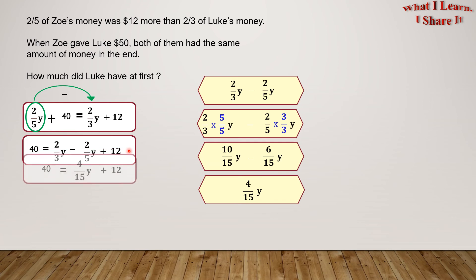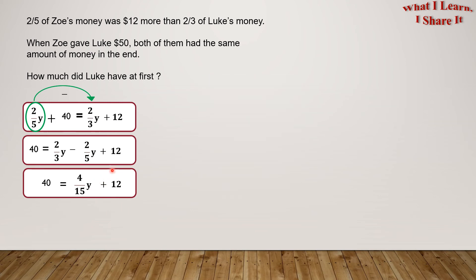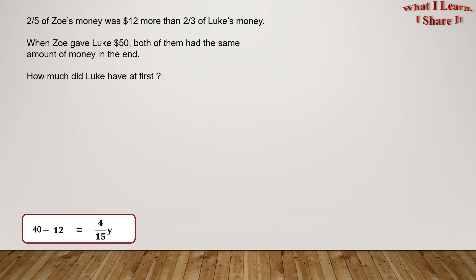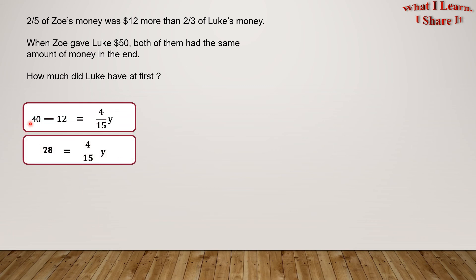40 equals 4/15Y plus 12. Now let's transpose 12 to the other side. When we transpose, the signs change. And we'll get 40 minus 12 equals 4/15Y. 40 minus 12 equals 28.